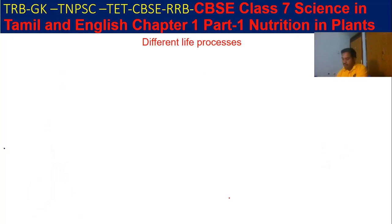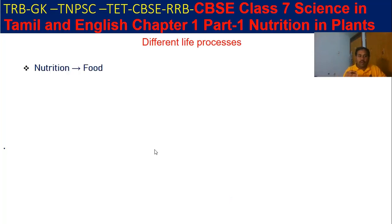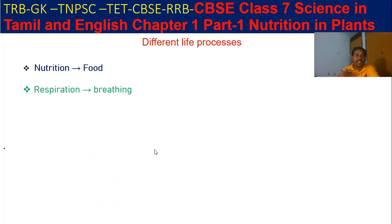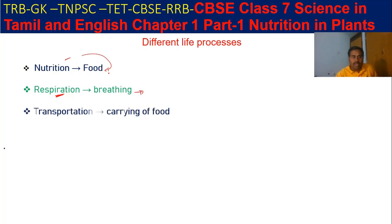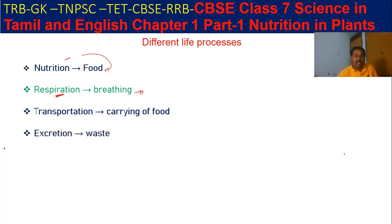So what are the different life processes available? The first is nutrition — we need nutrition, and we take it from food. The second is respiration, which means breathing — it is like a life cycle only. Then transportation means the carrying of food, where energy and nutrition from food is carried around the body.